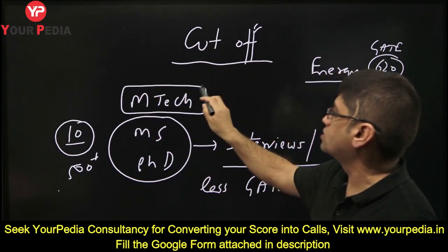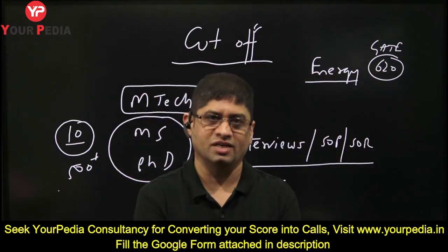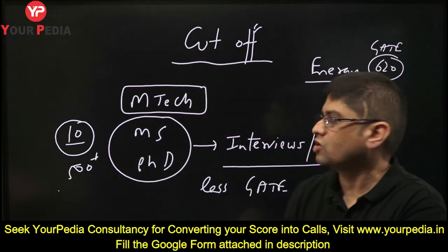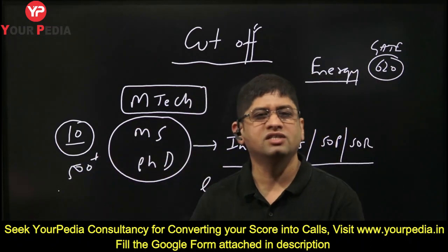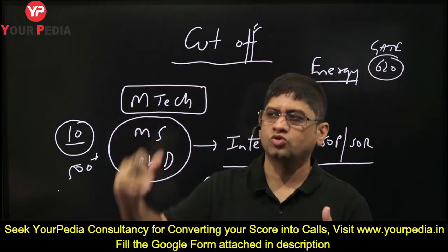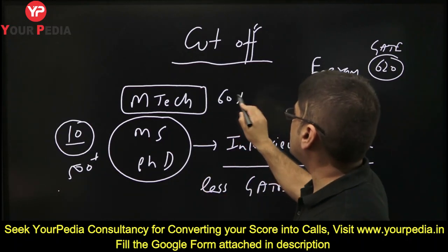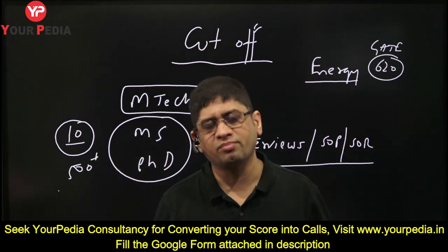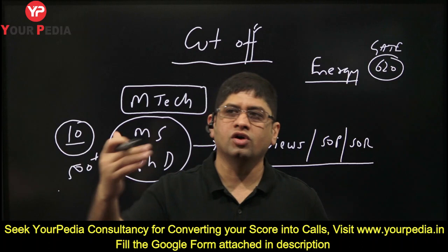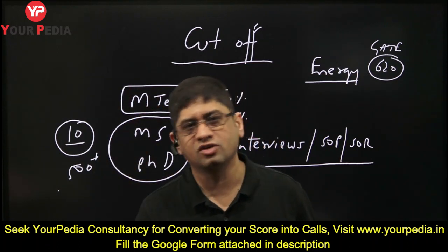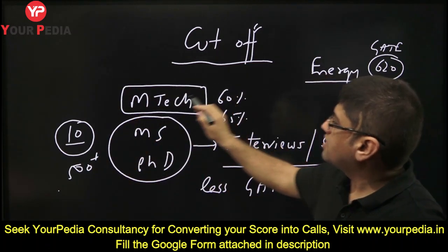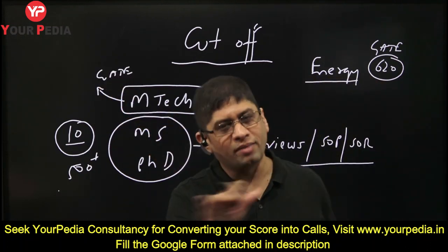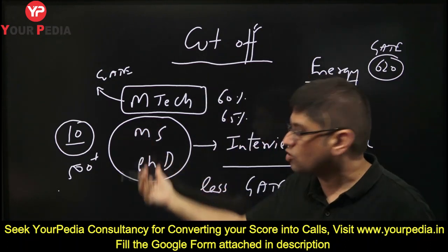Cut-offs are given for M.Tech courses, in which normally there is no interview. For M.Tech, admission is done mechanically based on GATE score. The requirement is 60% or 65% CGPA — if you have that, then GATE score is the only criteria, regardless of whether your CGPA is 90% or 85%. So cut-offs are normally mentioned for M.Tech courses in IITs, not for MS and PhD courses — it cannot be mentioned for those.